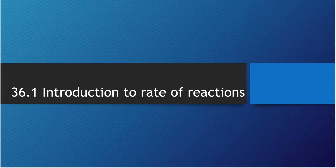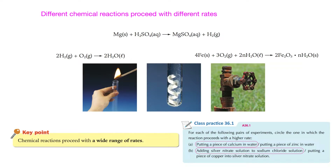In this video we're going to talk about introduction to rate of reactions. Different chemical reactions have different rates. For example, hydrogen reacting with oxygen — the pop sound test — the reaction is very fast. If you have a large quantity of hydrogen, it will be even explosive.